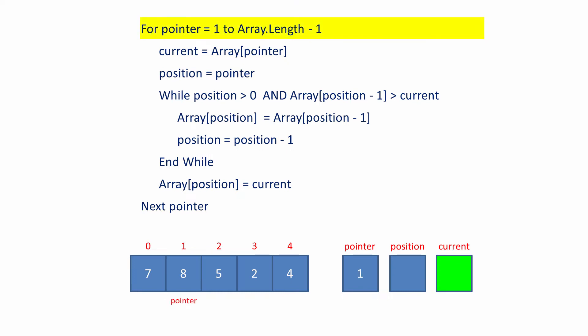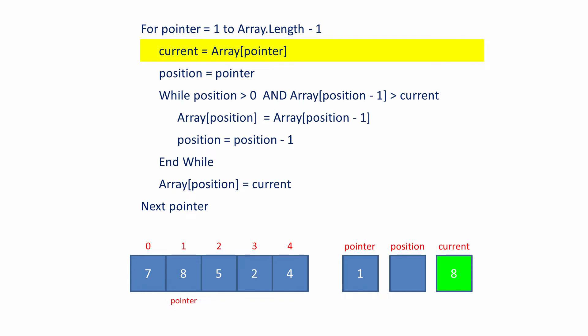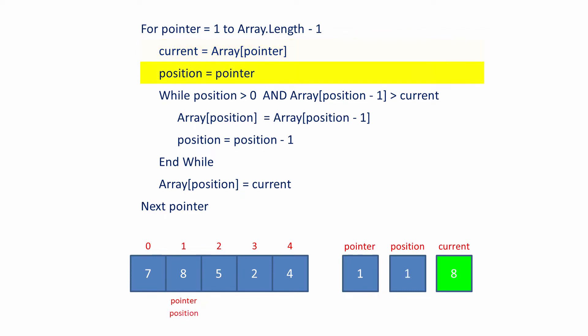The value of pointer is initialized to 1 by the outer loop. The pointer separates the sorted section of the list on the left from the unsorted section on the right. The pointer points to the first item in the unsorted section. The item in the array given by the value of pointer is copied to the variable current. The value of the variable pointer is copied into the variable position.